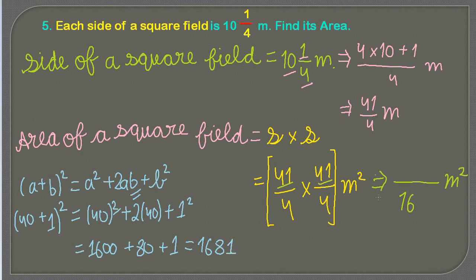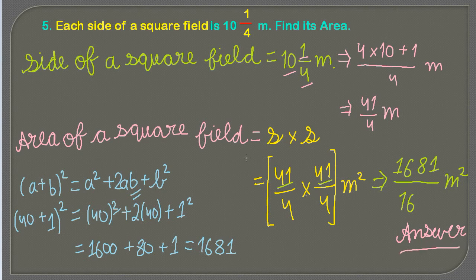So we are going to put here 1681 meter square. Now that's our answer. Well again you can multiply them directly, but in this case I have used a property, so that's your wish. So 1681 upon 16 meter square is the answer.